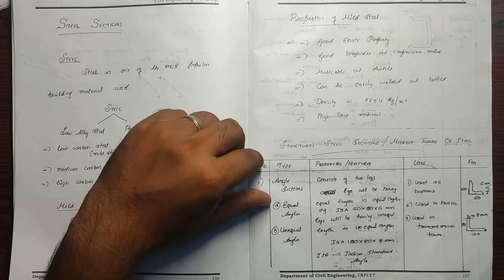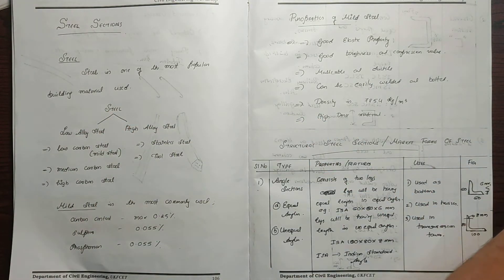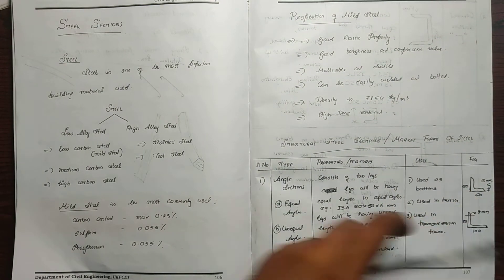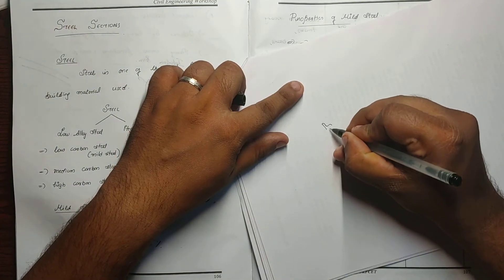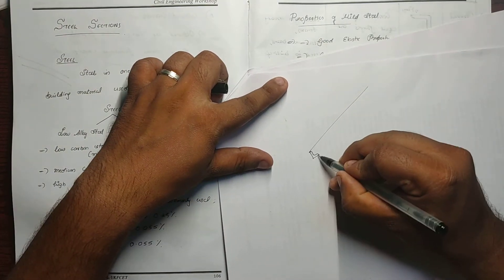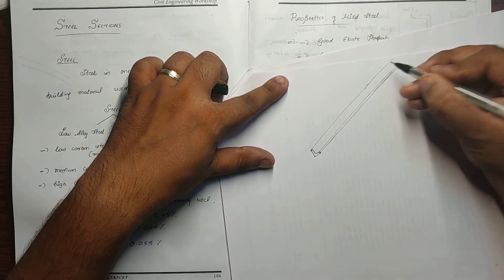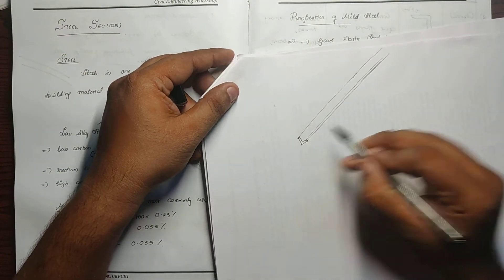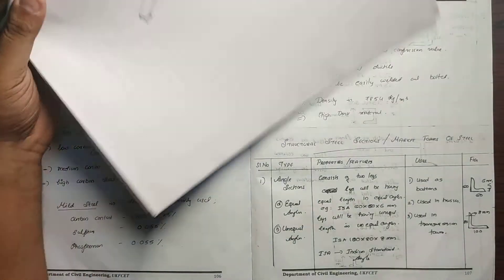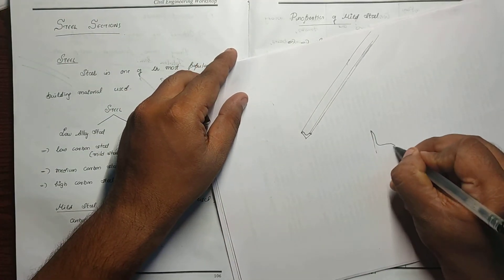There is also an Angle Section. If you look at an angle section from the side, it has two areas or legs. Looking at the height of the angle section — about 5 to 4 meters — that is why we look at the angle section.